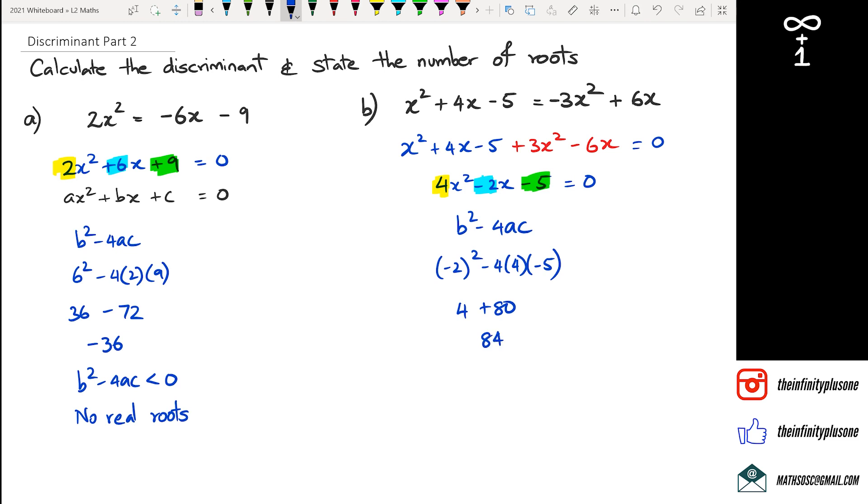Now in the previous question I wrote b² - 4ac < 0. I could also do it like this: the symbol for discriminant, which is the triangle, is greater than zero. But if you're not sure, you're more than welcome to just write b² - 4ac is positive.